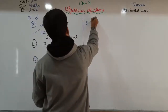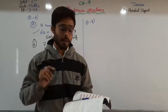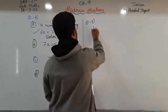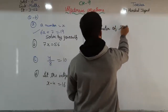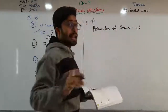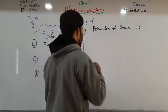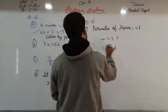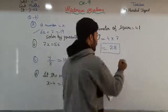Question number 8: the length of a square wall is 7 metres; find the perimeter of the wall. Perimeter of a square is equal to 4l, where l is one side. Here l is given as 7 metres, so perimeter is 4 into 7, which is 28 metres. So the perimeter of the square wall is 28 metres.